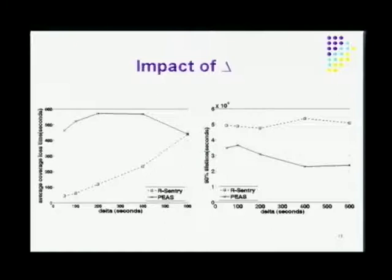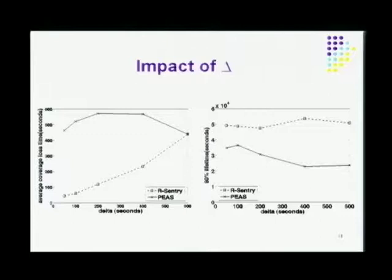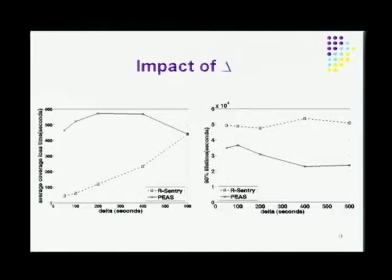As we increase delta, the average coverage service loss time in R-Century goes up as delta increases, which is exactly what we want. However, PEACE does not show any meaningful trend with respect to delta — there is a dip up to 400 seconds but the trend is not there. At the same time, as we increase delta, R-Century can still maintain roughly a constant 90% network lifetime, whereas PEACE does not show a clear trend in this graph.